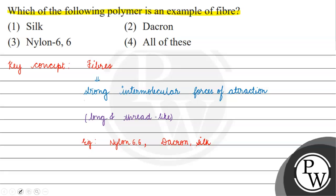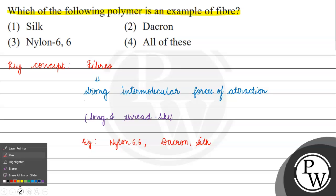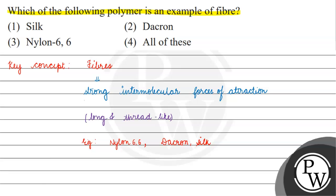The question asks which of these is a fiber. Since all three — silk, dacron, and nylon 6,6 — are fibers, the correct answer for this question would be option four: all of these. I hope you understood it well. Thank you, all the best.